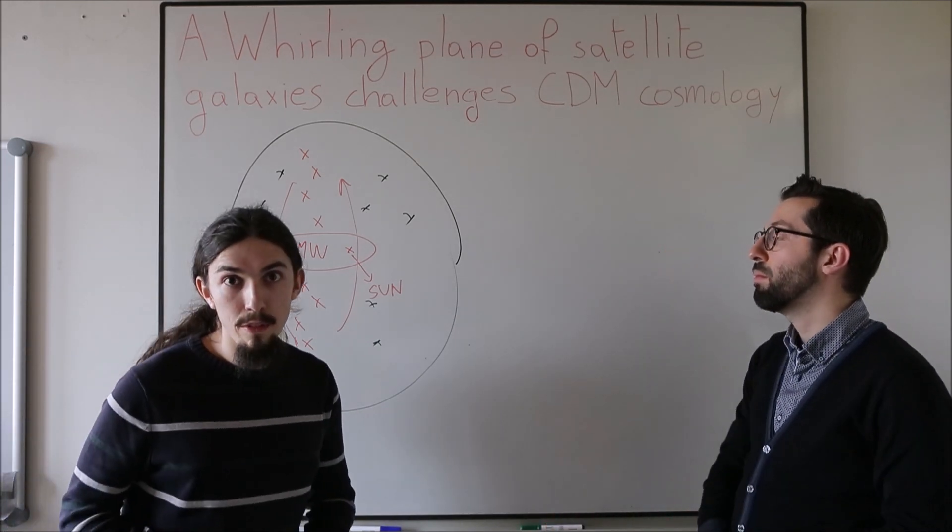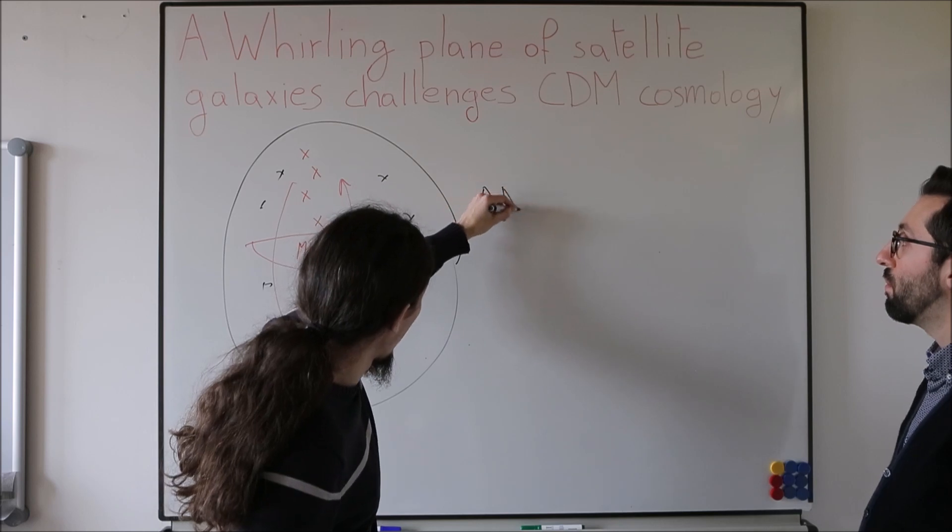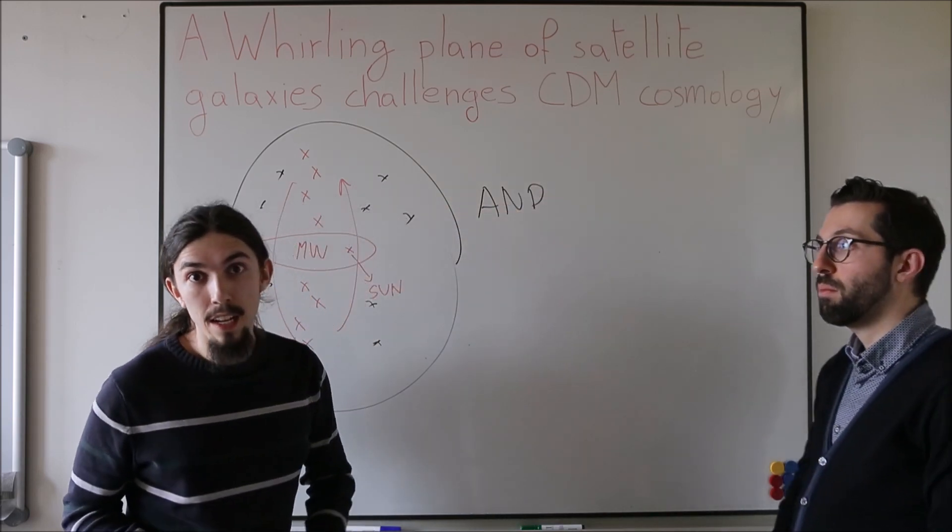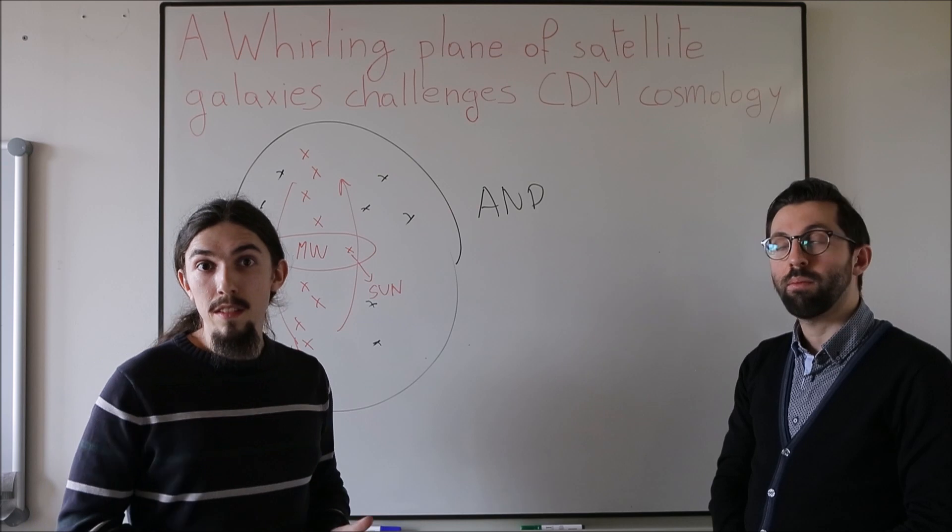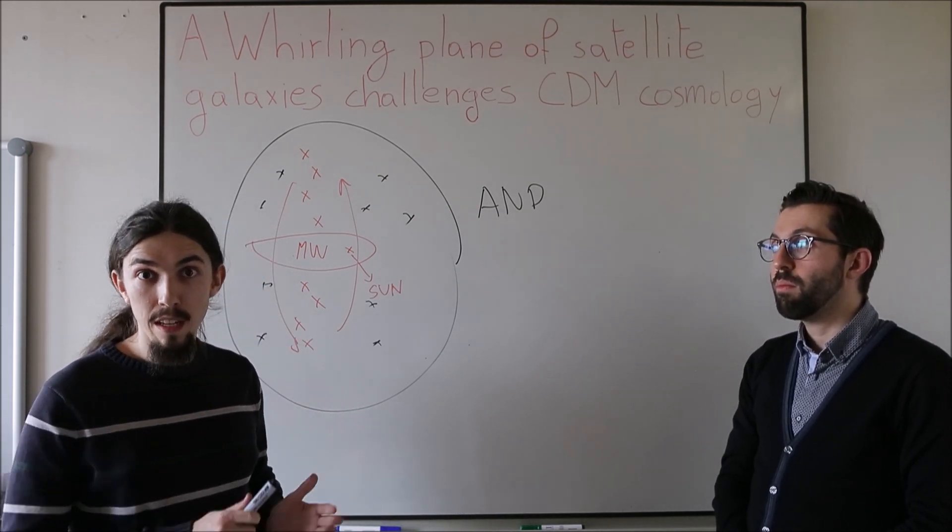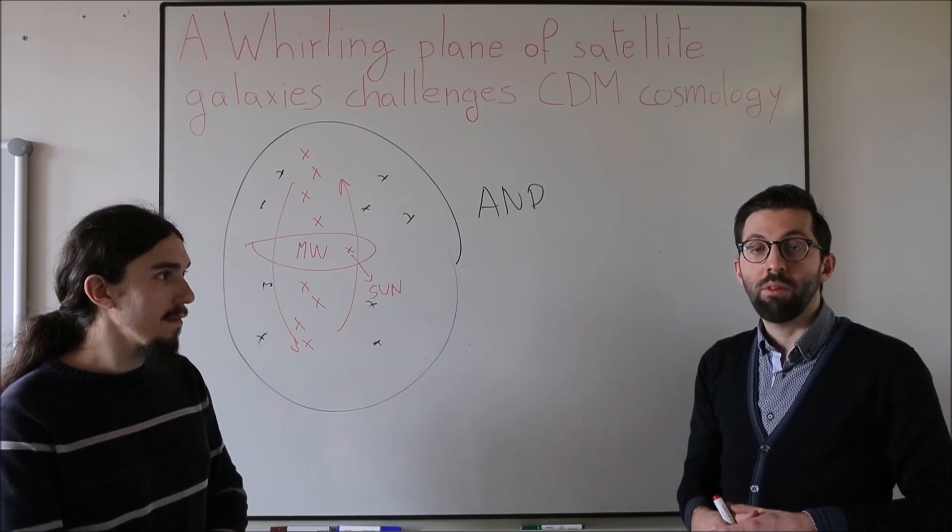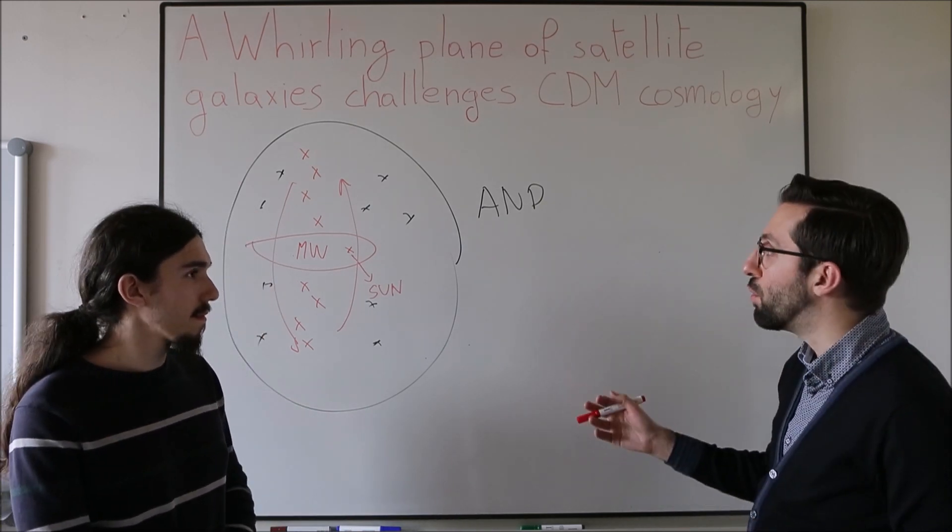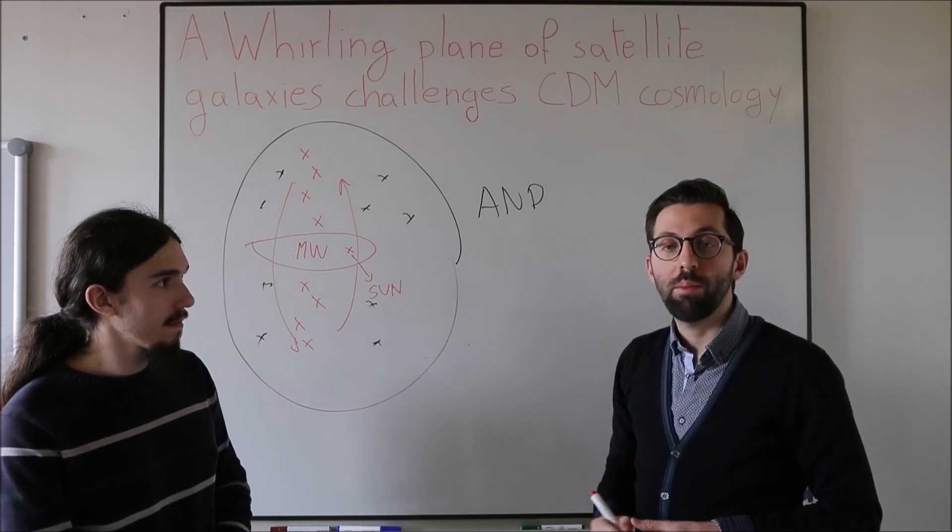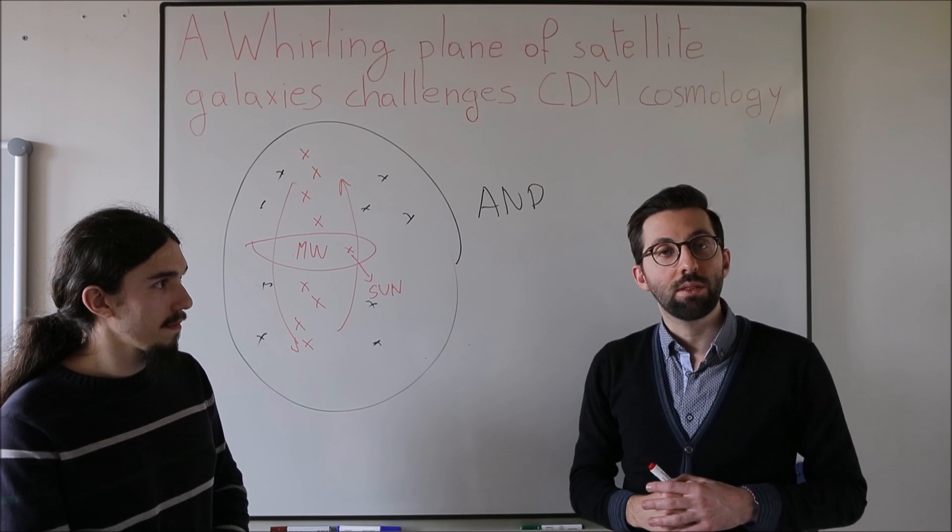Another example for such a structure is the Andromeda galaxy, our neighbouring big galaxy in the local universe. It has half of the satellites there are also aligned in a plane which seems to co-rotate. Some people, therefore, think that our local neighbourhood including Andromeda and the Milky Way is atypical and therefore shouldn't be used to test cosmology.